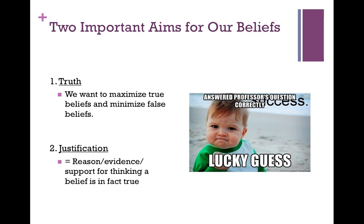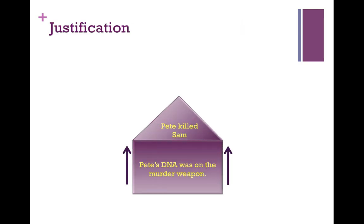When I talk about evidence or reason, I don't necessarily mean scientific charts or data. Evidence or reason can take many forms — basically any kind of justification you might have to support your belief. The way I think about it: your evidence forms the foundation and structure of a house, and your belief is like the roof. Your evidence holds up and supports that belief. For example: Pete's DNA was on the murder weapon — therefore, Pete killed Sam. The evidence holds up and supports that conclusion.